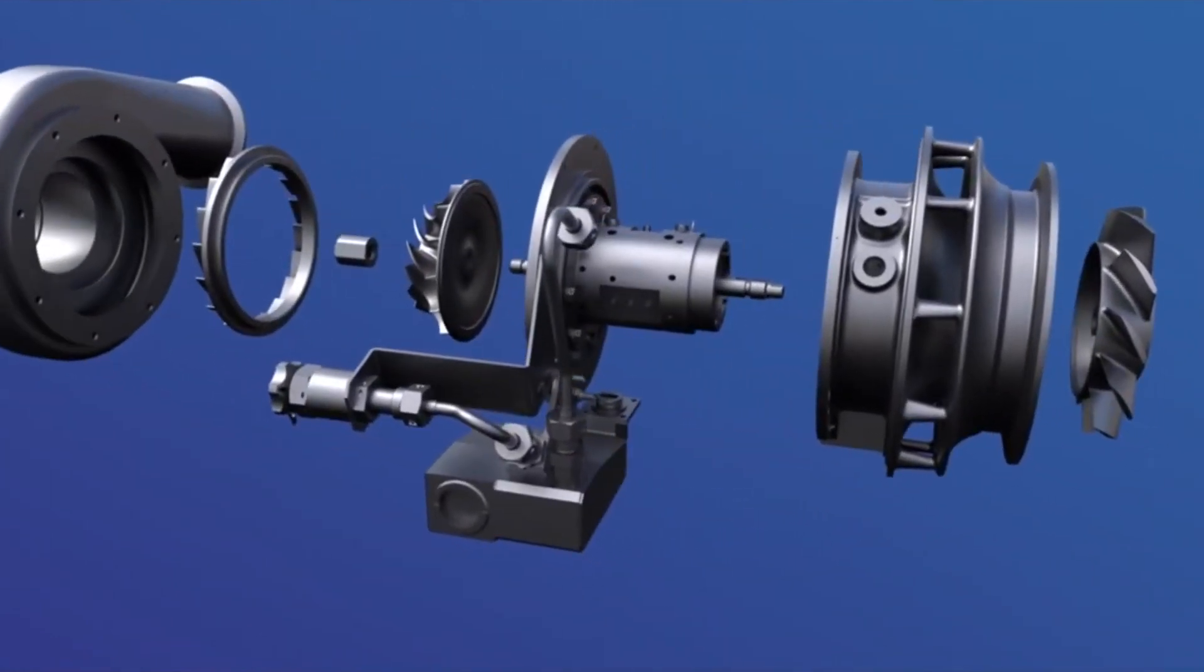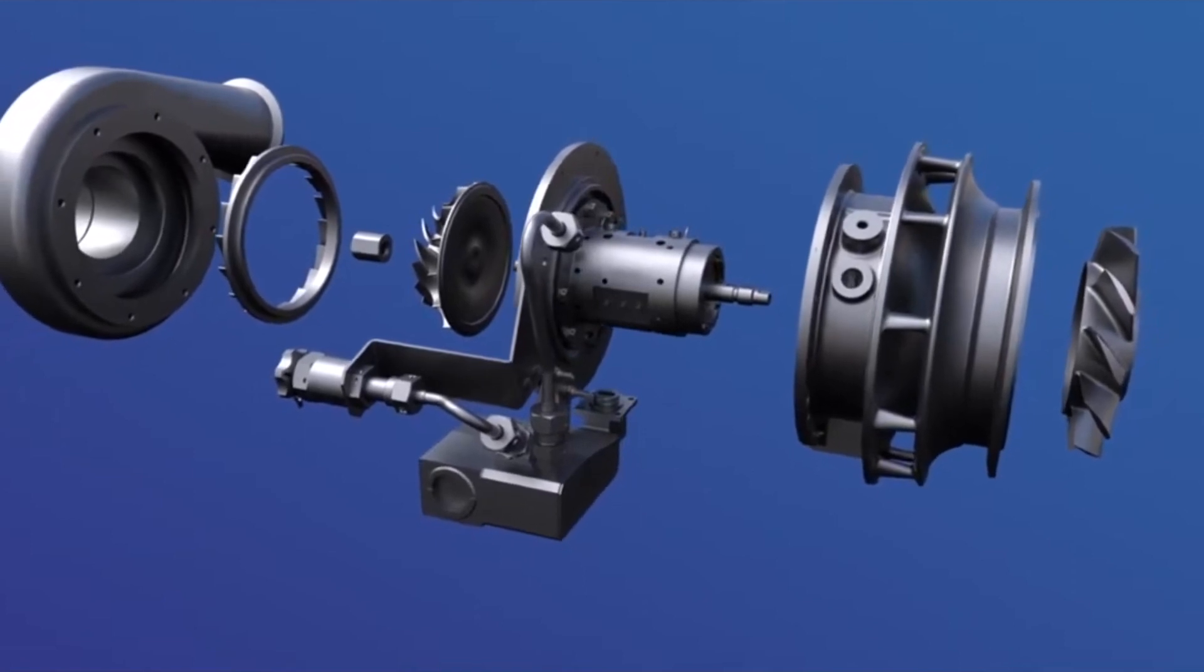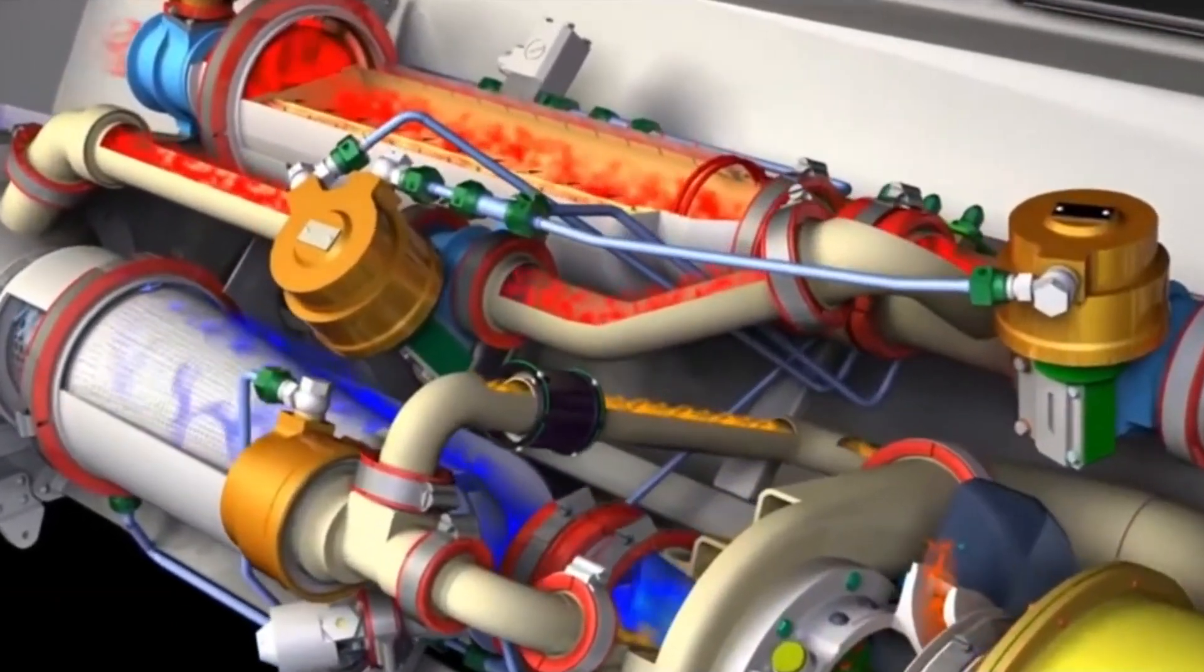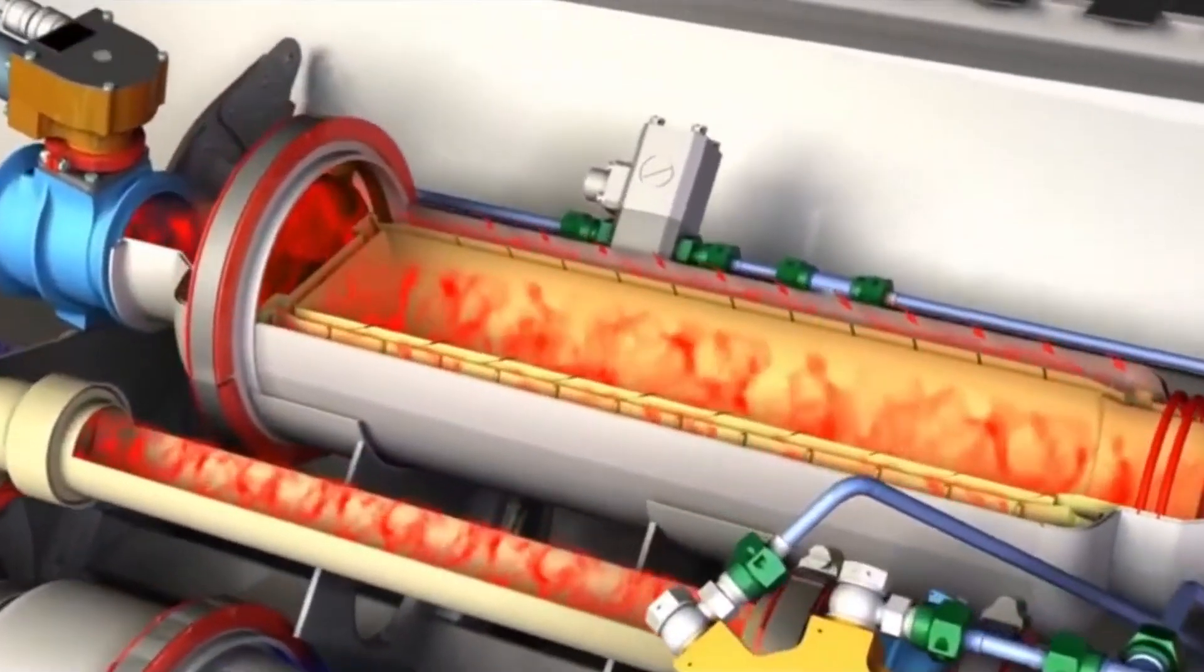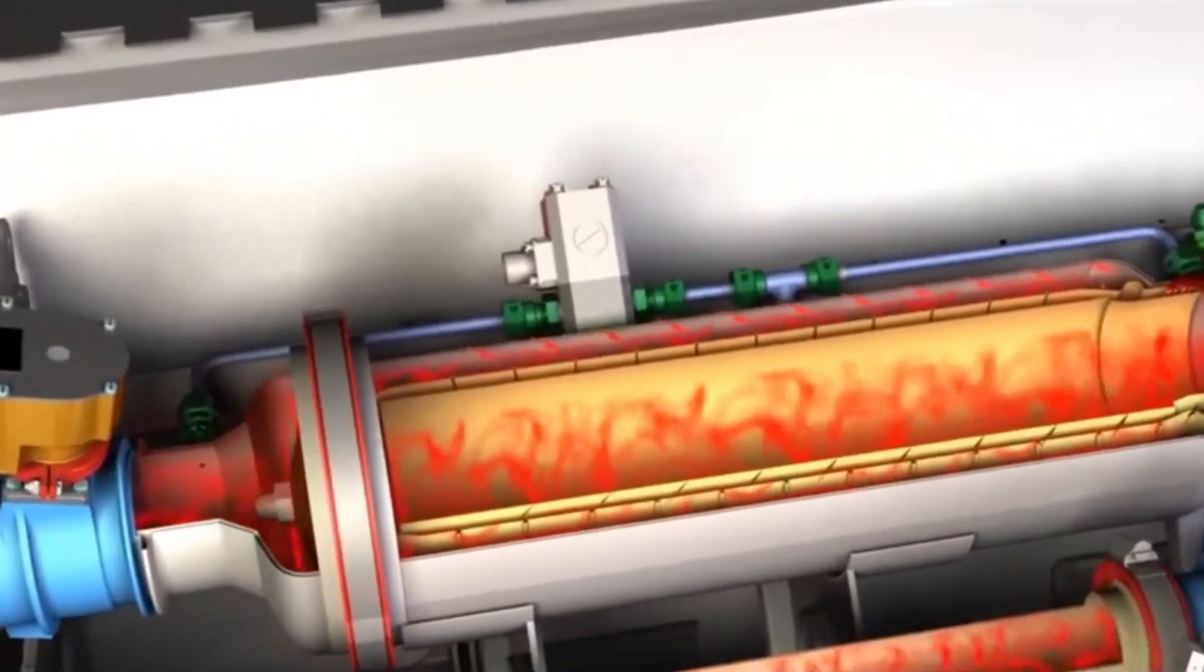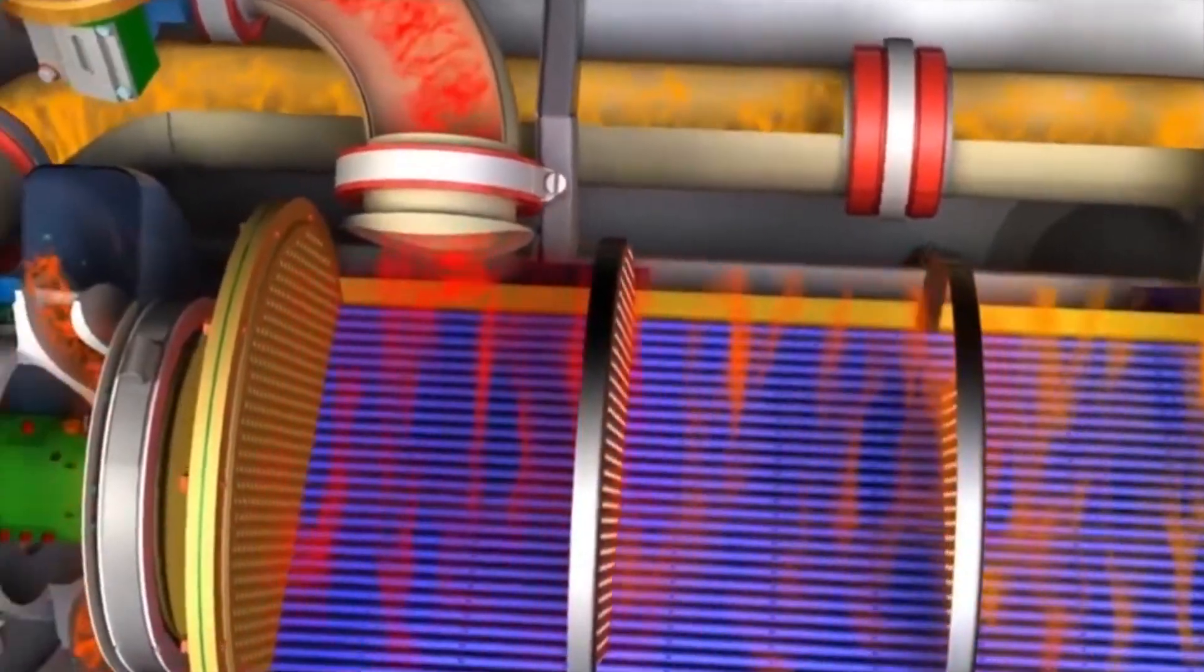An ECS also regulates the pressure and temperature of an airplane's cabin. It is essentially a computer that sends signals to various equipment to regulate environmental conditions within the space.